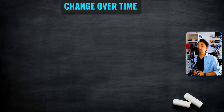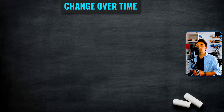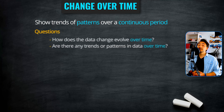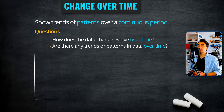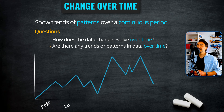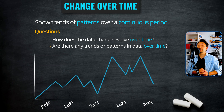We'll start with the first and most basic category: change over time, or sometimes called trends over time. This category shows trends or patterns over a continuous period. It usually answers the question: how does the data change over time? Or are there any trends or patterns we can uncover from the data over time?